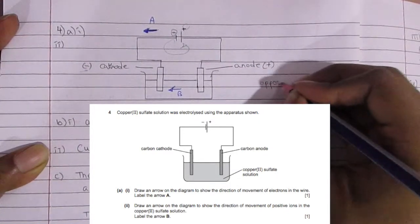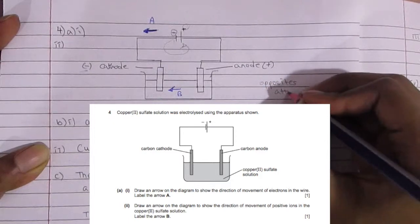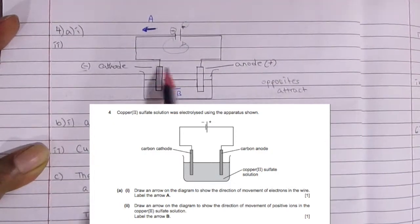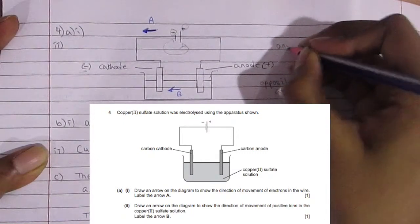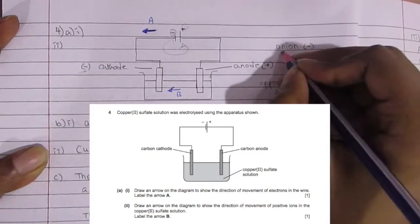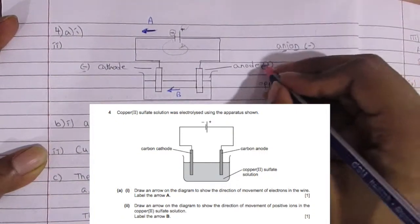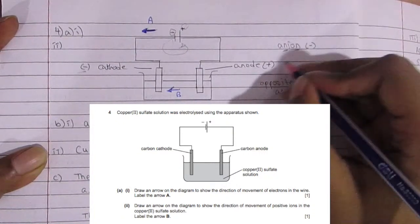And then obviously opposites attract. Now for the positive ion, it's going to move from the anode to the cathode because again opposites attract. You can remember anion being the negative ion because it has two N's for negative, and then the anode would end up being its opposite which is positive.